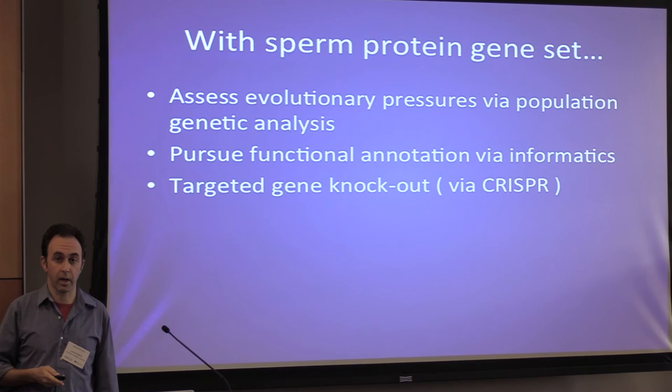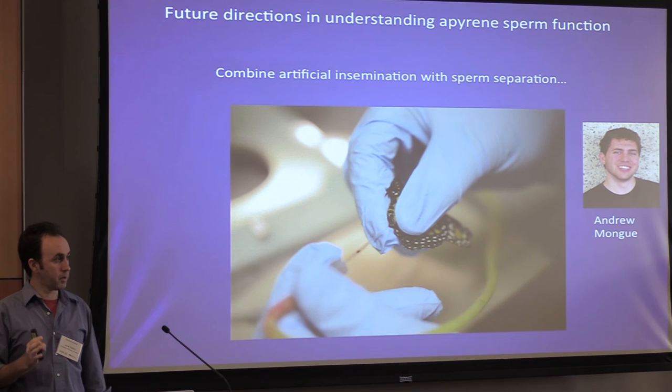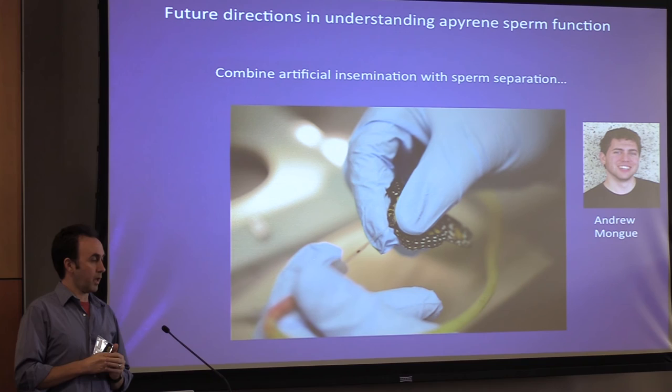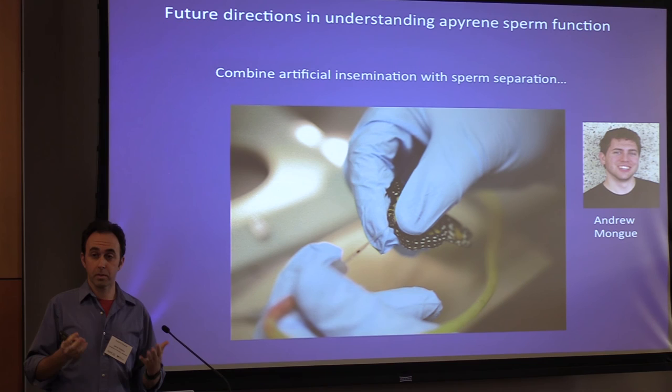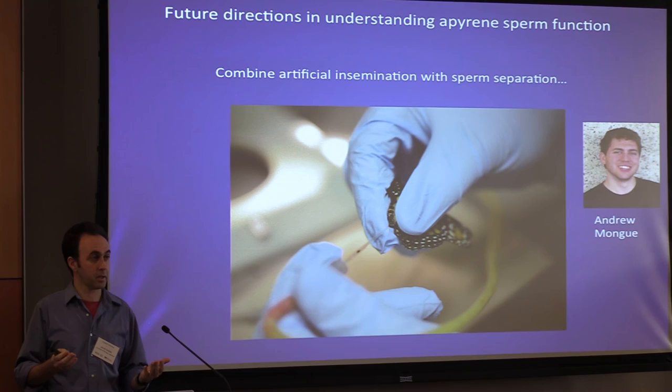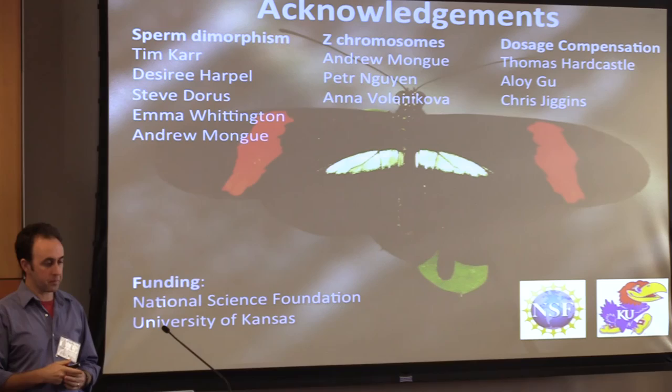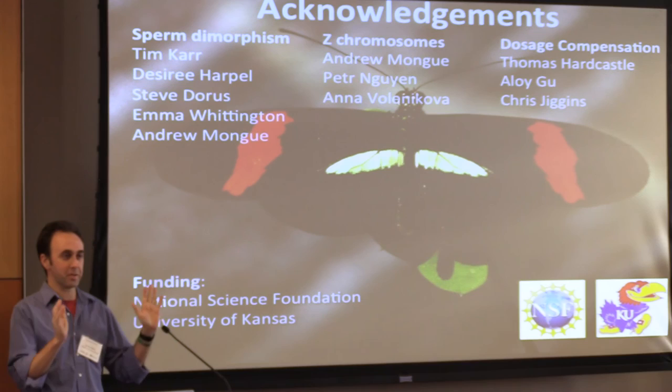This is a work in progress, but we now have this gene set and can start saying something evolutionarily about these sperm with population genetics, genomics, and functional information, and hopefully targeted knockdown with CRISPR. Additionally, Andrew has successfully developed artificial insemination in one moth species, so since we can separate apyrine from eupyrine sperm, there's an excellent opportunity to do organismal experiments — manipulating the presence of apyrine sperm in single and multiple matings to figure out their function. Thank you for listening, and please do engage the other folks in my lab.